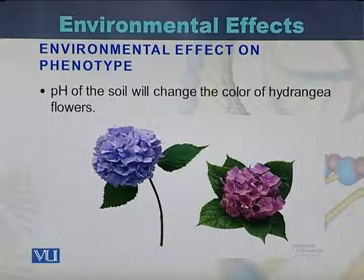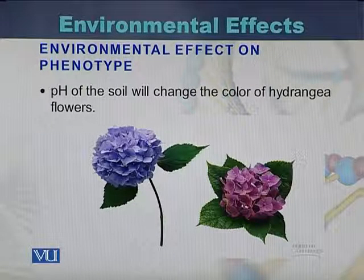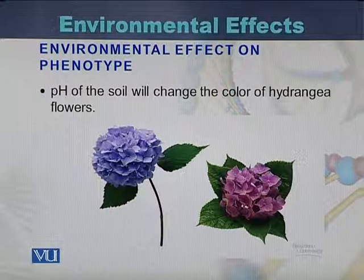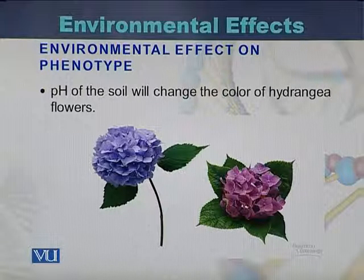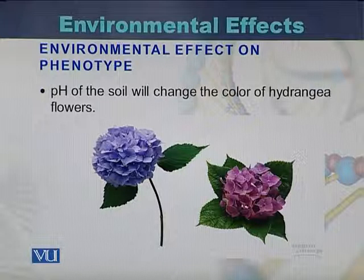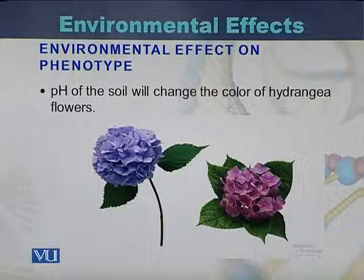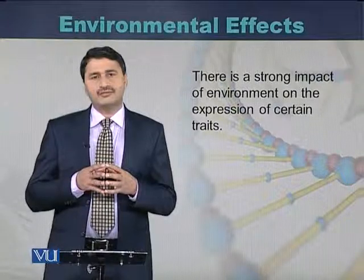The third example of environmental effect is a plant called hydrangea. The hydrangea plant comes in two color types depending on the pH of the soil: it can be pink in color or blue in color. If the soil pH changes, the flower color can shift from pink to blue. These are all examples of how the environment influences the expression of certain traits.